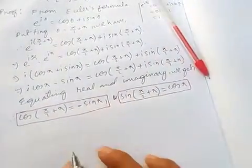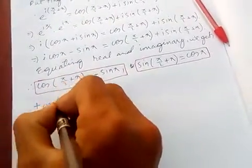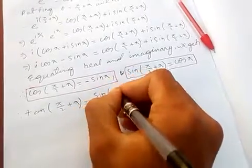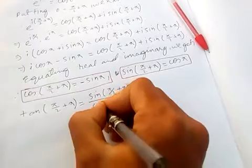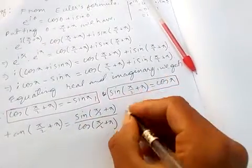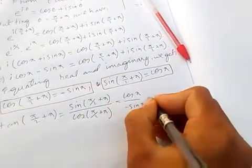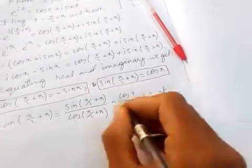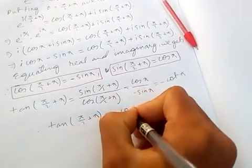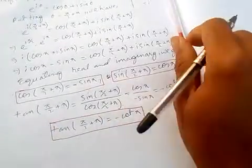Now let's prove tan(90°+x). We know tan(x) = sin/cos, so tan(π/2 + x) = sin(π/2 + x) / cos(π/2 + x). We proved sin(90°+x) = cos(x) and cos(90°+x) = -sin(x), so tan(90°+x) = cos(x) / (-sin(x)) = -cot(x).